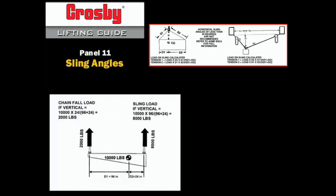If the chain fall lifted vertically, the tension in the chain fall would be 20% of the load weight of 10,000 pounds or 2,000 pounds. If the sling lifted vertically, the tension in the sling would be 80% of 10,000 pounds or 8,000 pounds.